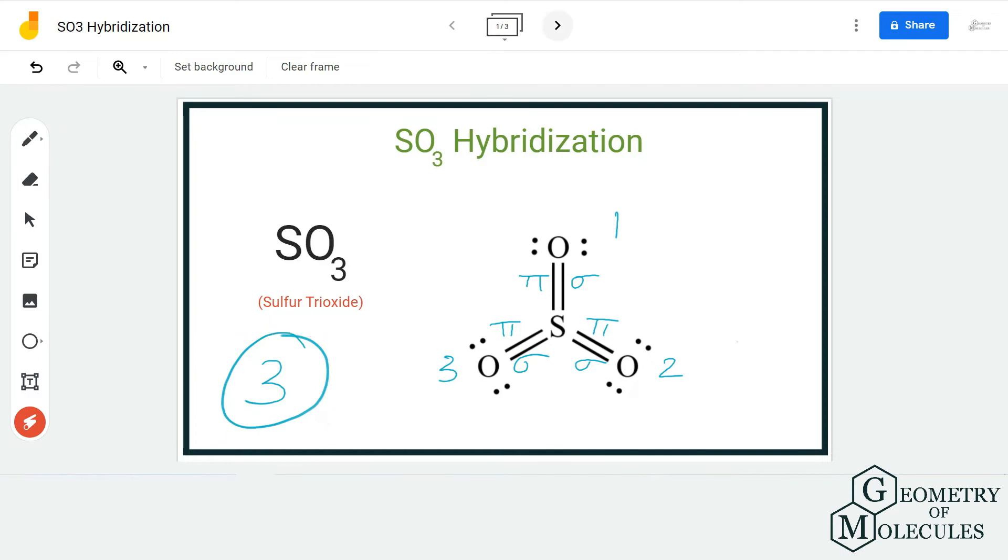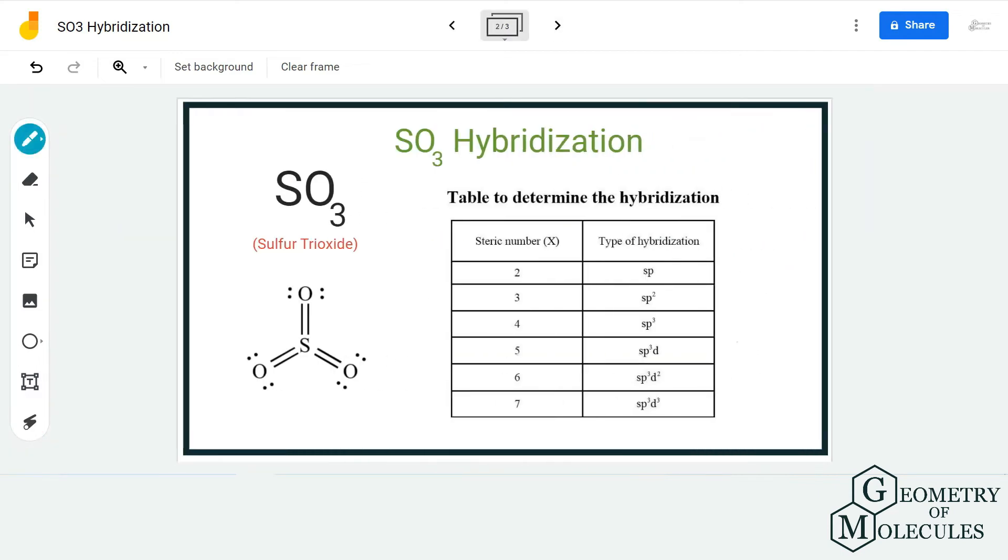As mentioned, there are three electron regions which means the steric number of SO3 is 3, and it corresponds to SP2 hybridization in the table. Hence, a sulfur atom in this molecule will have SP2 hybridization.